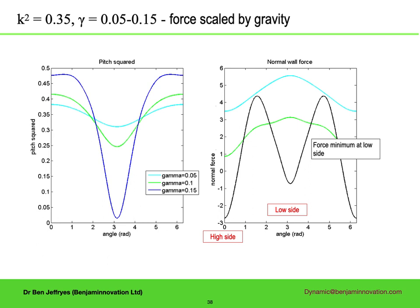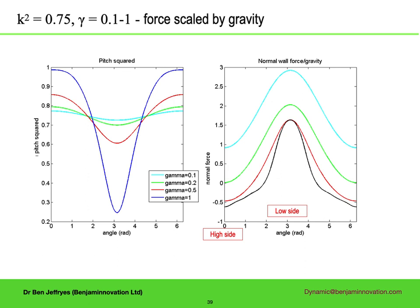Now, for a lower value of k squared, where the range of allowable gamma is reduced, I have kept the more physical force normalization. For gamma equals 0.1, the normal side force is looking like a squared off curve. For gamma equals 0.15, there is a physical solution with enough rotation. But now, surprisingly, there is a local force minimum on the low side of the hole. In the other direction of k squared, and a wider range of gamma, the two higher values requiring rotation to be physical. For high gamma, a very wide range of pitch, and a quite non-sinusoidal force variation.